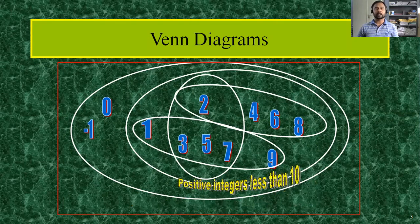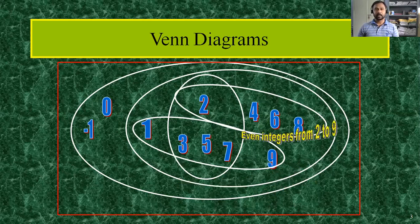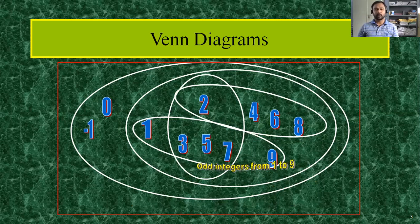Now what does the next set represent? This represents positive integers less than 10. You can see that minus one and zero are excluded. Going inside again, here it is even integers from two to nine: two, four, six, eight.